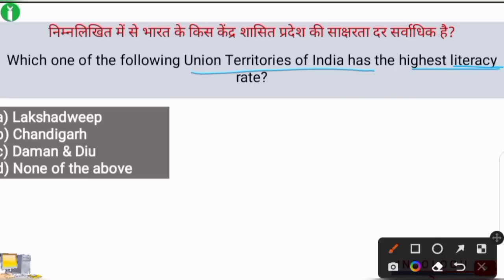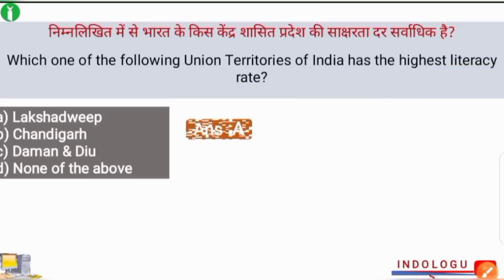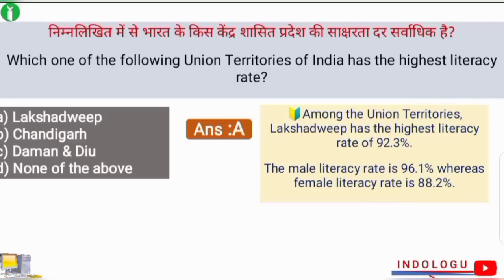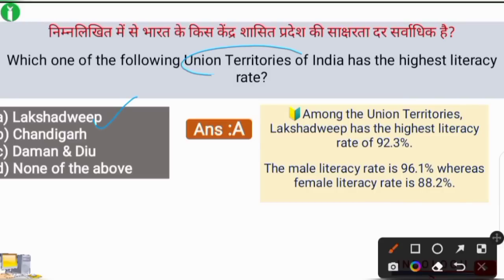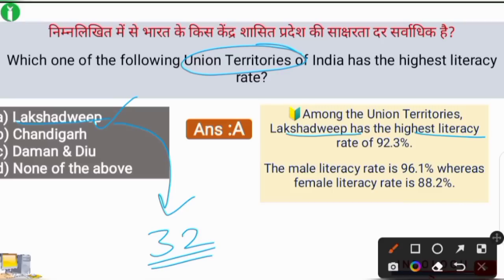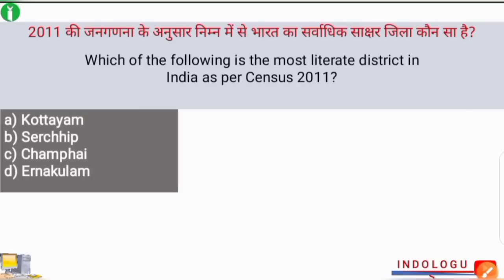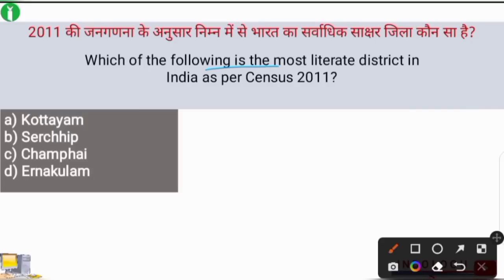Next question: which union territory of India has the highest literacy rate? The correct answer is option A — Lakshadweep. Lakshadweep has the highest literacy rate among union territories at around 92.3%. The male literacy rate is 96.1% and female literacy rate is 88.2% in Lakshadweep, which has 32 islands in total.